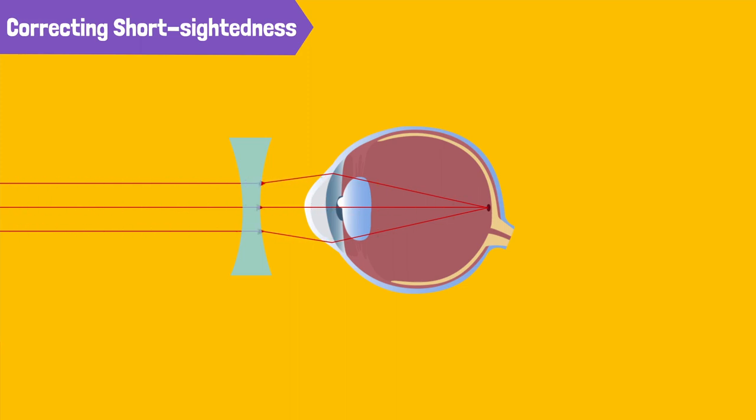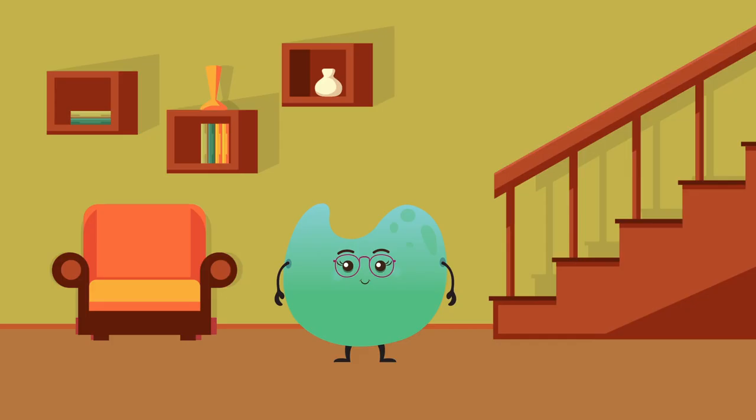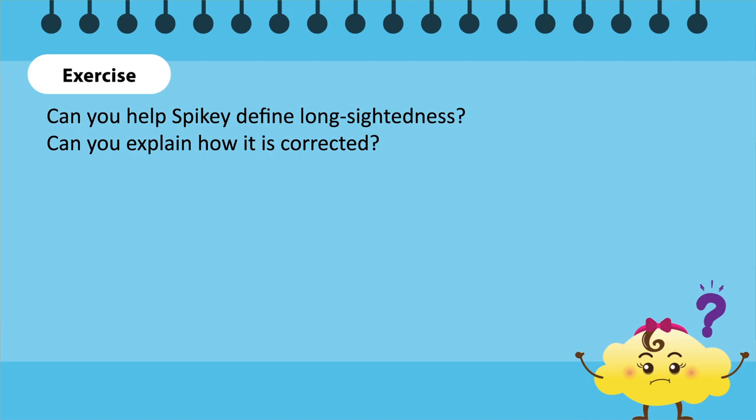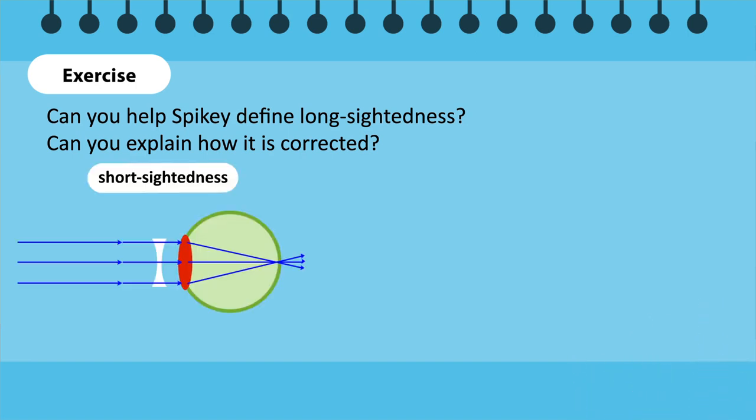What do you suppose would happen if I couldn't see nearby objects? Time for an exercise! Can you help Spiky define long-sightedness? Can you explain how it is corrected? I'll give you a hint. It's the opposite of short-sightedness, which we just learned about.